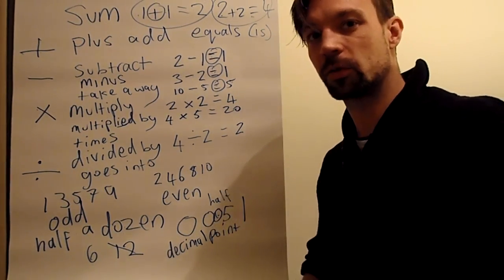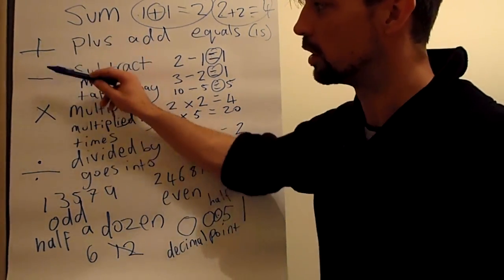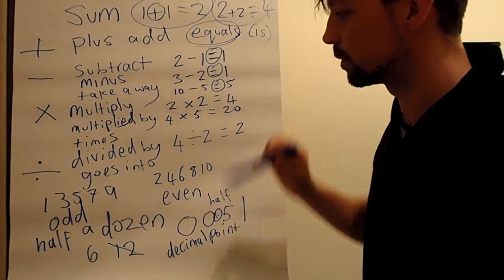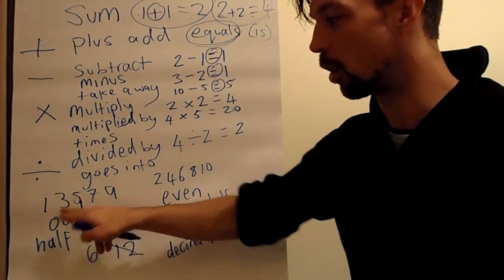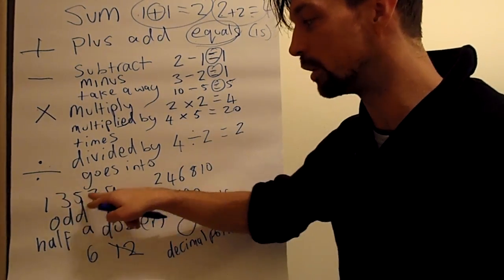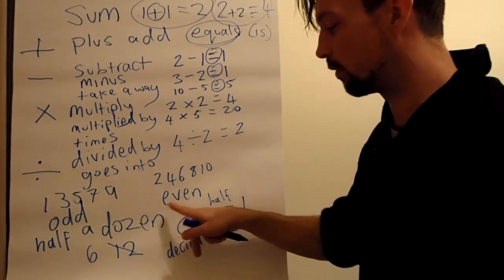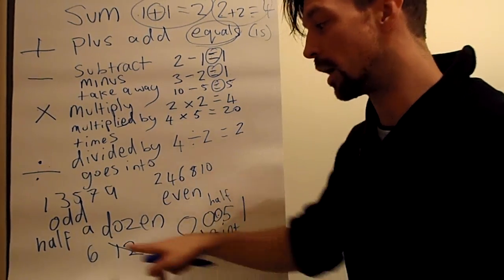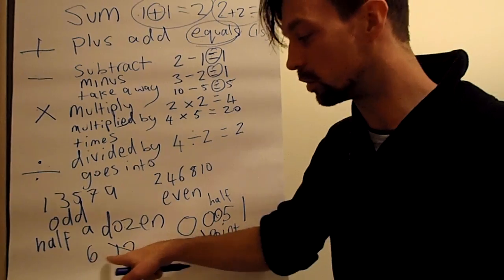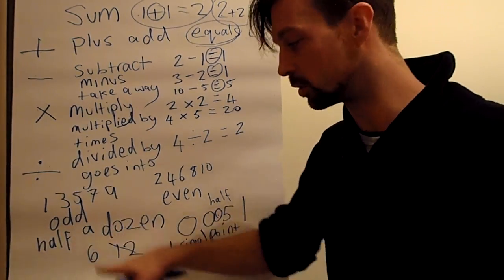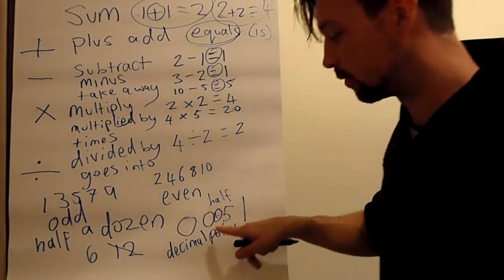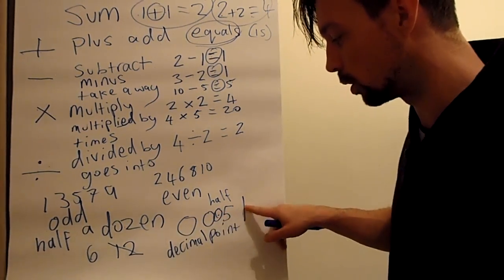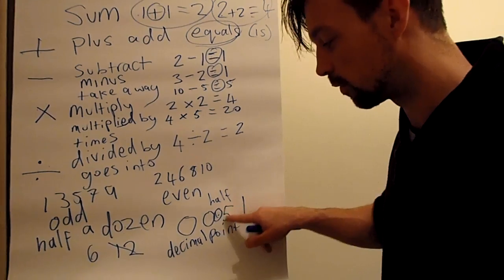This is everything for today's video. So we have plus, minus, multiply, divide, we have equals. All of these. We have odd numbers: 1, 3, 5, 7, 9. We have even numbers: 2, 4, 6, 8, 10. We have a dozen, which is twelve, and half a dozen, which is six. And we have decimal points. So between whole numbers - you have zero and one - you have nought point five.